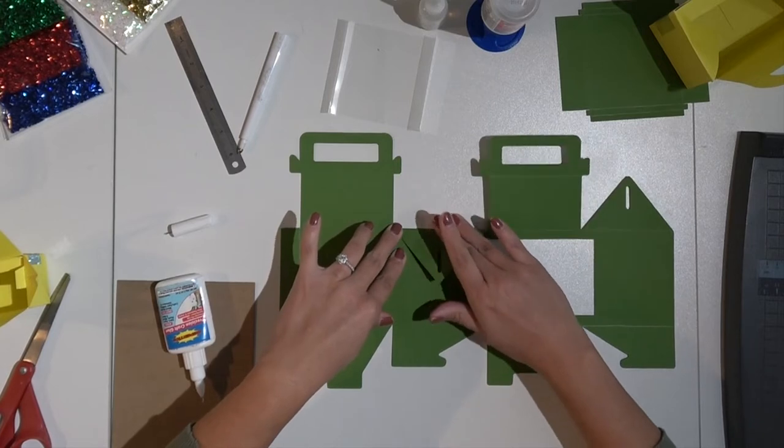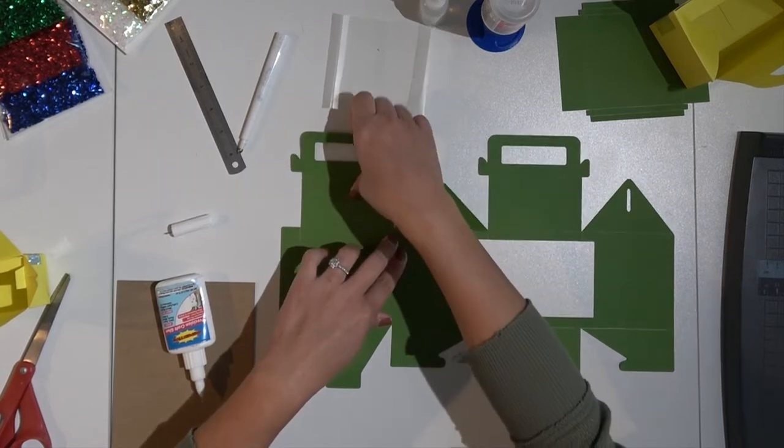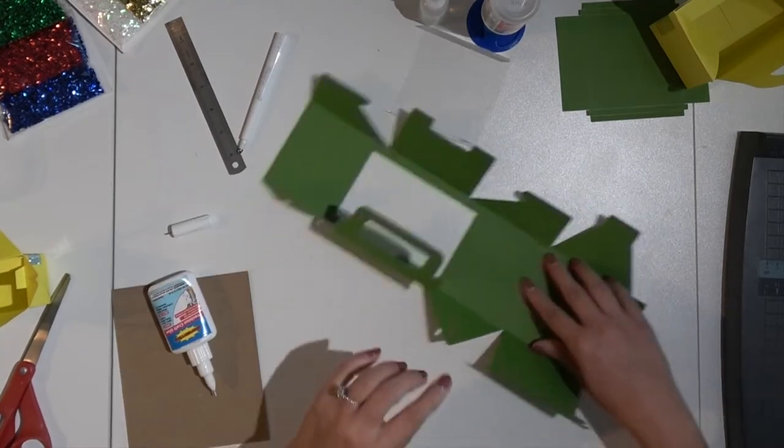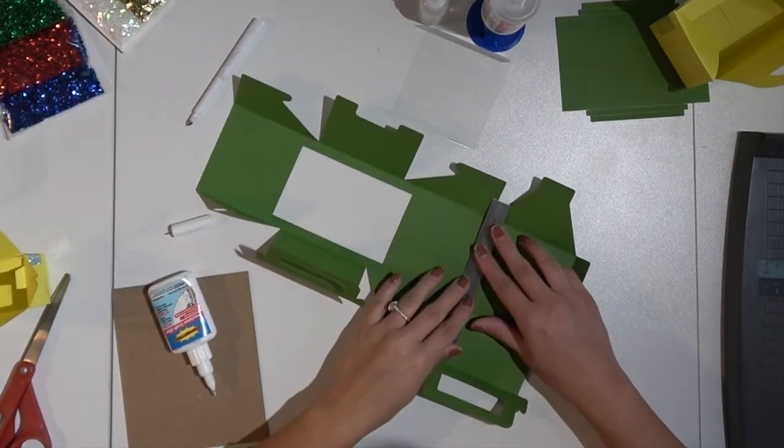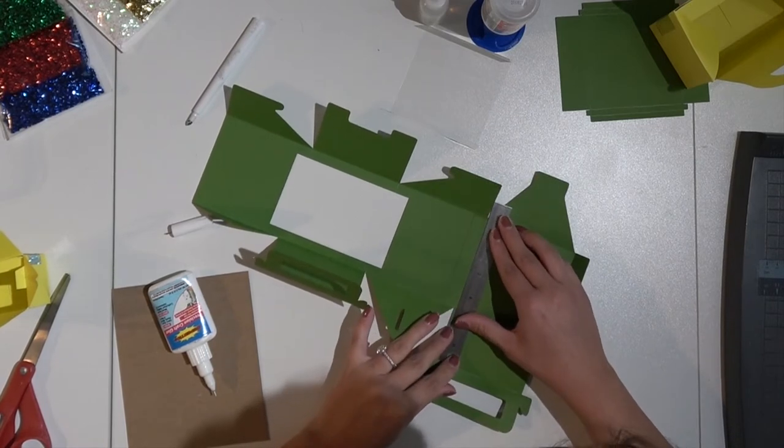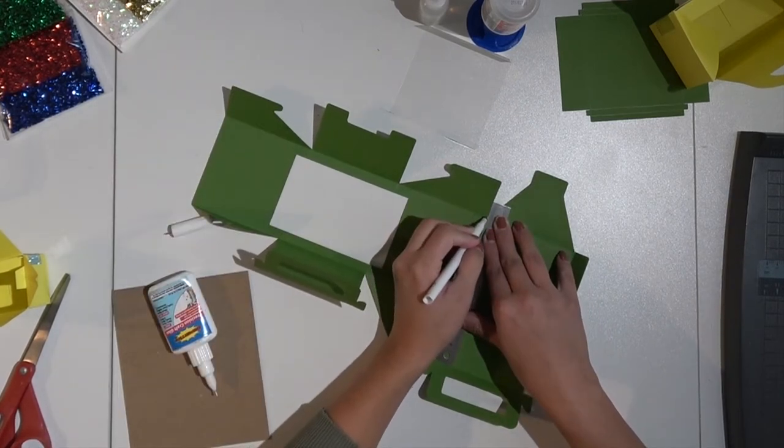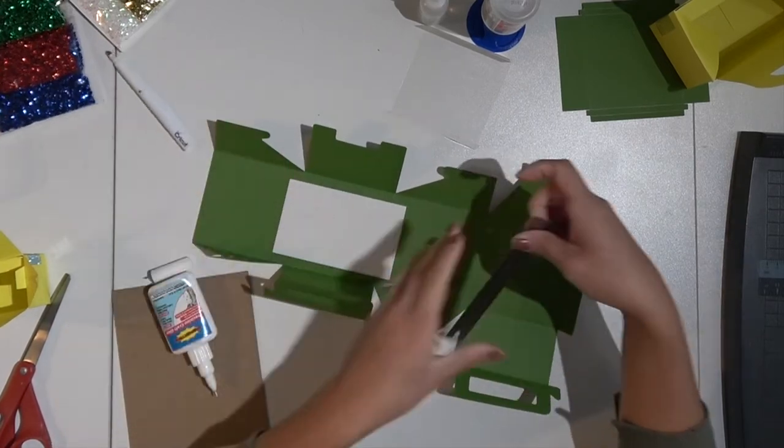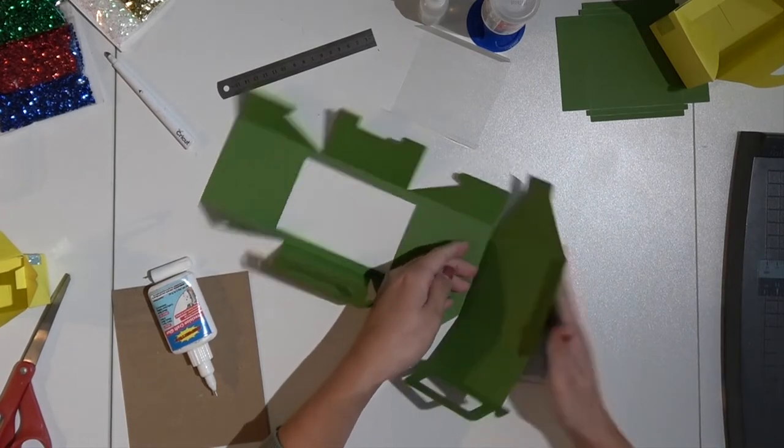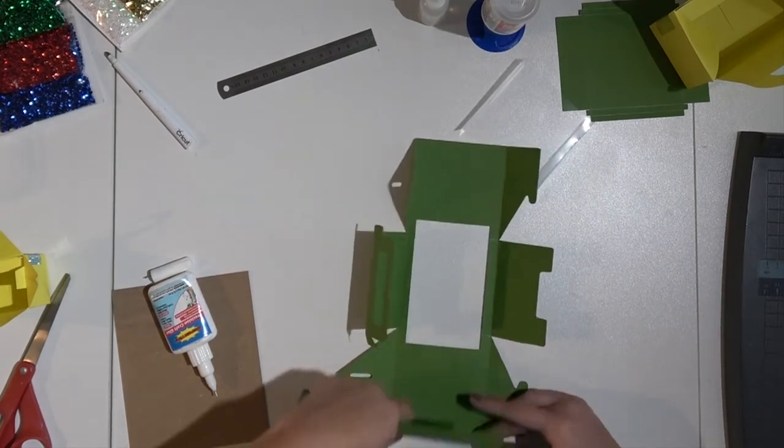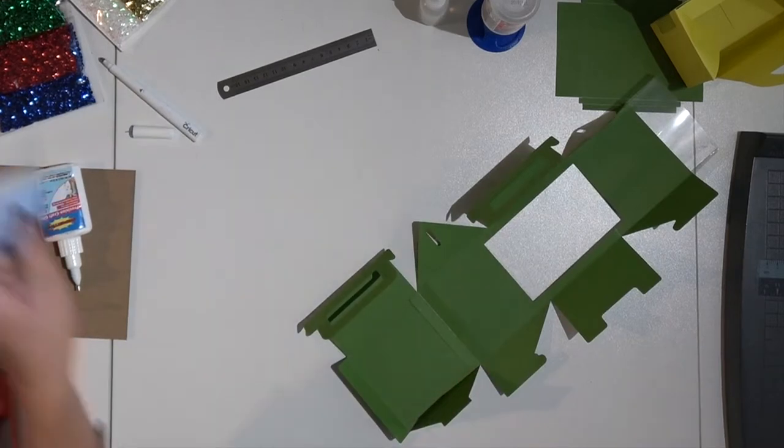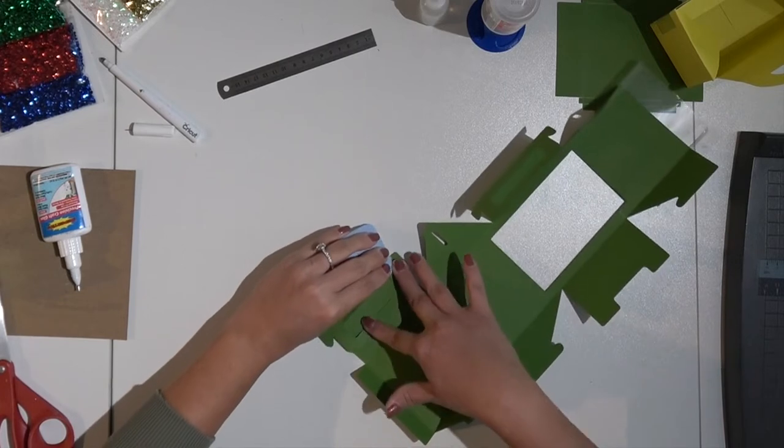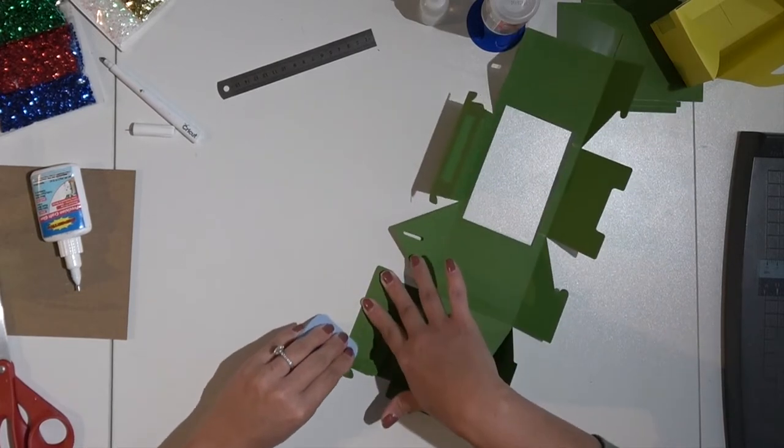As that dries we can go ahead and just fold in our score lines. We're going to fold in and fold out. Because there's no score line right here just take your ruler again, match it up to the seam and then put your little scoring tool. Throw it down the center. There we go and then we're going to fold this in. I always like crisp lines so I just take my little brayer tool and I fold these down nice and crisp.